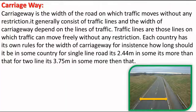First of all, we study about carriageway. Carriageway is the width of the road on which traffic moves without any restriction. It generally consists of traffic lanes, and the width of the carriageway depends on the number of lanes. Each country has its own rules for the width of carriageway. For instance, for a single lane road it's 2.44 meters in some countries, and for two lanes it's 3.75 meters.